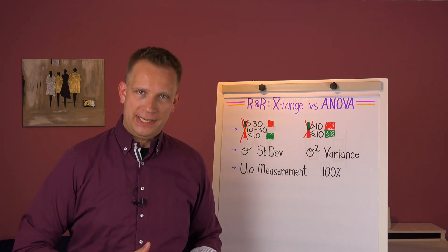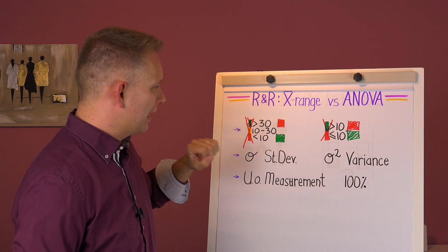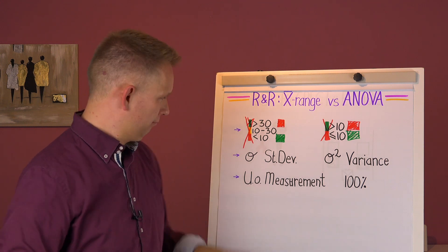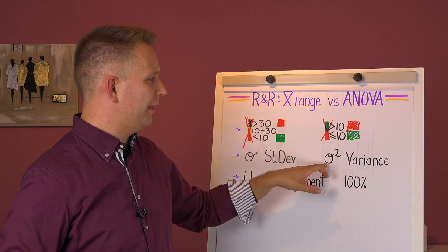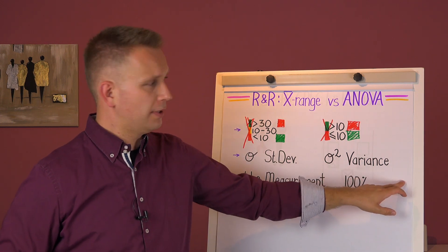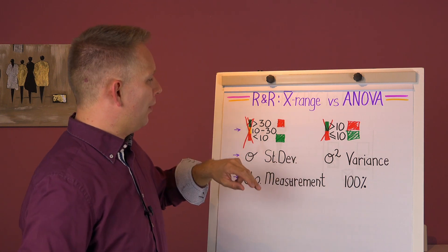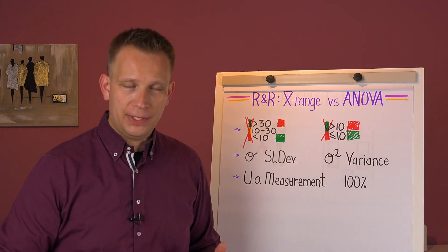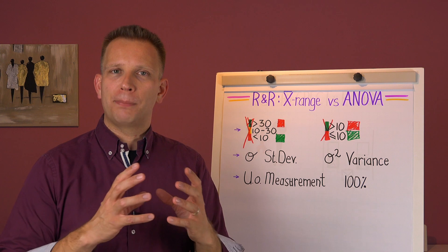The way that they put it higher than 30 is always wrong, and then the ANOVA method with higher than 10 is always wrong. That is because they are measuring different things. This range method, it measures the standard deviation, sigma level. The ANOVA method measures variance, sigma squared. Now that is a different unit.